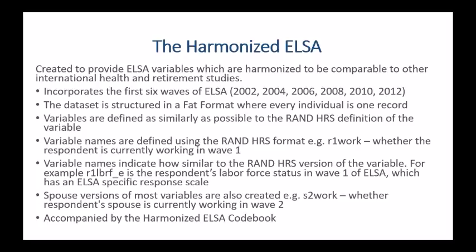We also include spouse versions of most variables. For example, S2work is whether the respondent's spouse is currently working in wave 2. These are really helpful for looking at family effects, saving researchers time identifying households where both, one, or no people are currently working. The harmonized ELSA and all harmonized datasets are accompanied by a codebook with extensive documentation on how each variable was derived, any cross-wave differences, and how variables differ from those in the RAND HRS.